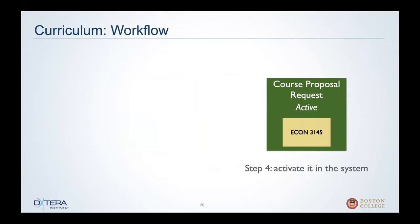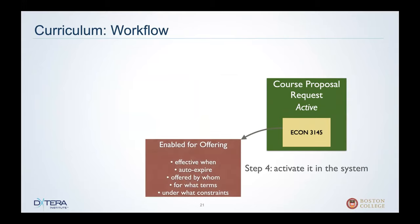Often there's some additional work that needs to be done — maybe somebody else is in charge of assigning the course code or managing the cross listings. But once we get to the end of the workflow, we now have an active course in the system. How do we tell the system the course is active and ready to go? We enable it for offering. This little offering enabler describes all of the rules in which Econ 3145 may be offered: when does it start, does it go on in perpetuity, or is it a pilot for just one year? Which department is going to be offering it? Is it a summer term only course?